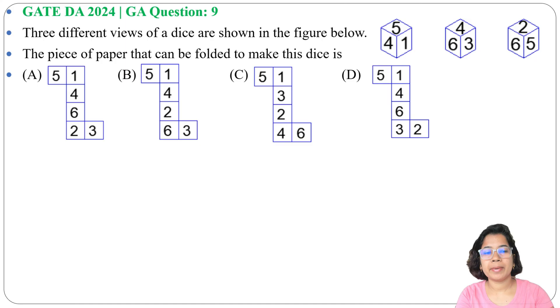In four options, four pieces of paper are given. Now we need to check which one by folding we can get this dice or not. Now option A, let me try to fold it. Let one side is 6.